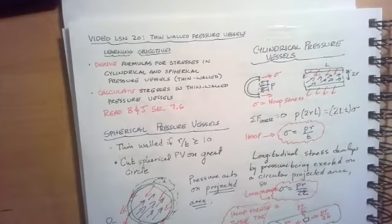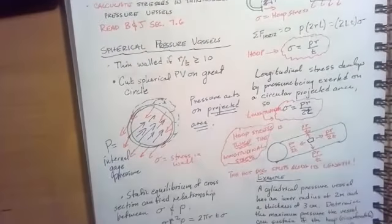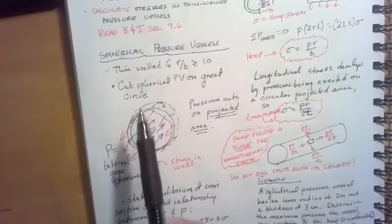Our learning objectives for this lesson are to derive formulas for stresses in cylindrical and spherical pressure vessels. These are going to be thin walled pressure vessels, not the general case where walls are thicker than an r to t ratio of 10 to 1. And we're going to calculate stresses in thin walled pressure vessels. For this lesson you should read Beer and Johnston section 7.6.